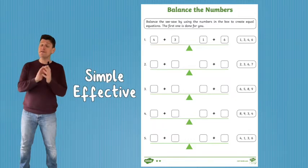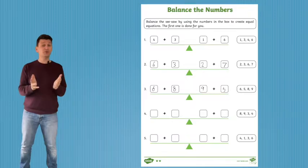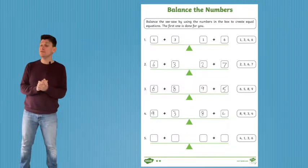These worksheets are a simple and effective way to get your children balancing simple equations. Simply ask your children to use the four numbers in the box to make each side of the seesaw equal.